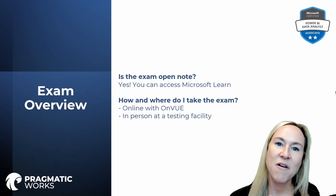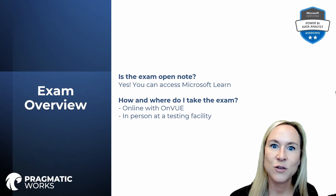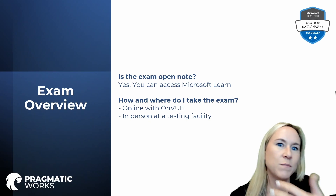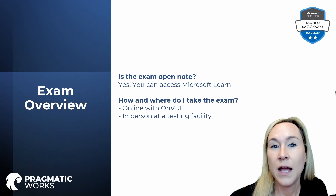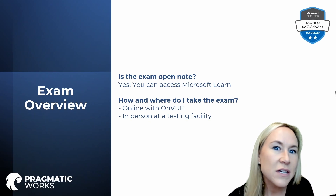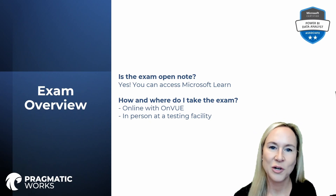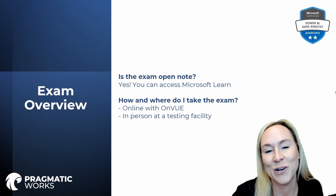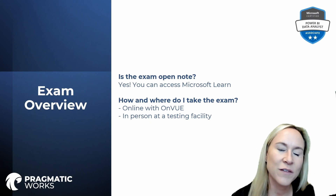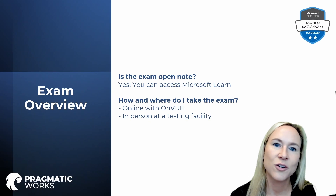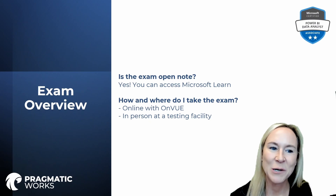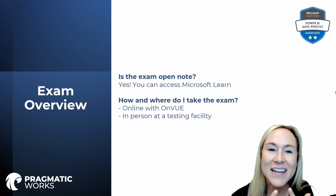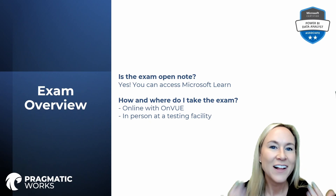When taking the exam online with OnVue, the testing room must be secure with no notes on the wall or anything that could be considered a resource aiding you. Although the exam is open note, you still must secure your exam room — even unplugging any additional monitors. You will need to present your government-issued ID, which must include your name, a photograph, and a signature. During check-in, you will have to submit photos of the room to confirm it's secure, as well as a selfie.